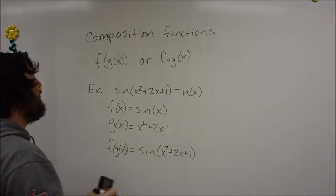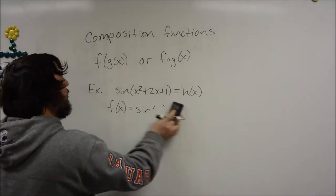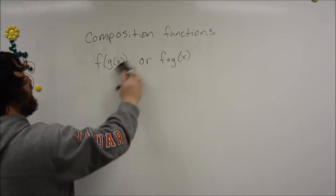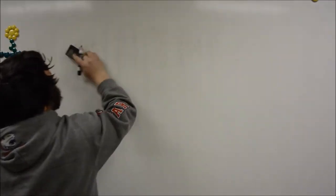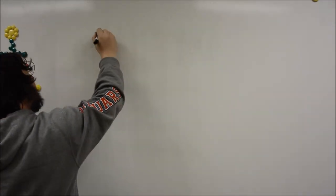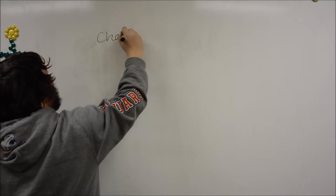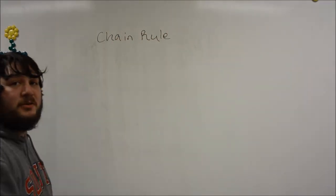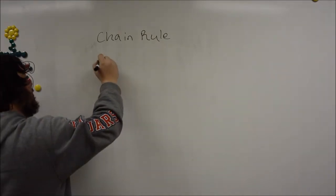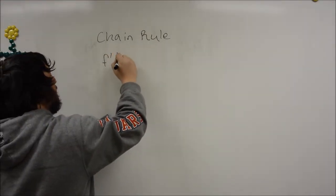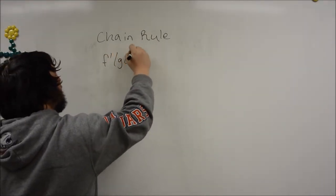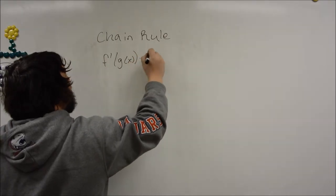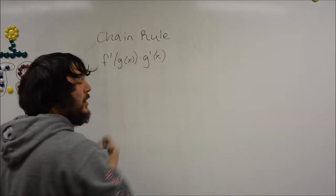Now, when taking the derivative of a composition function, we're going to use what's called the chain rule. And the general form of the chain rule is f prime of g of x times g prime of x.